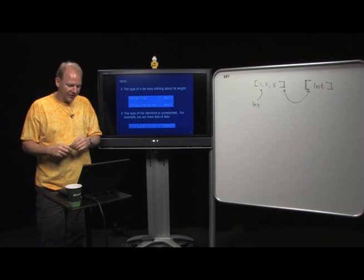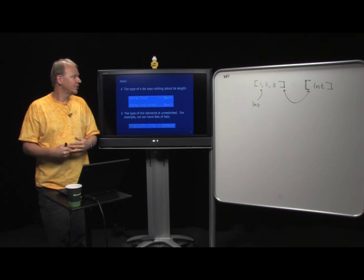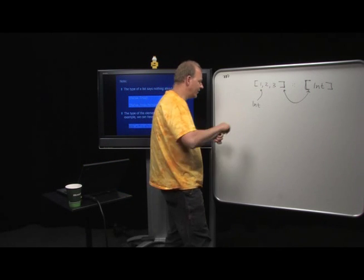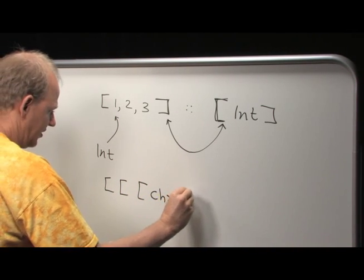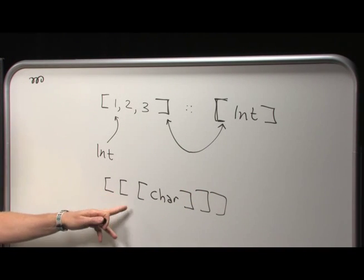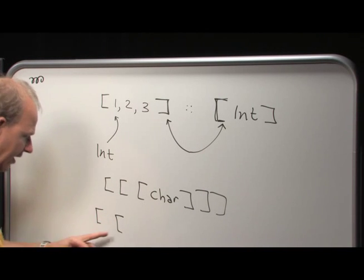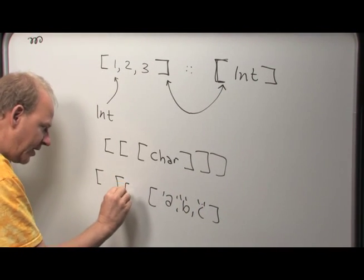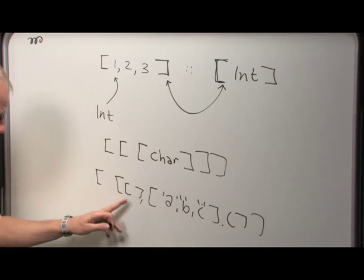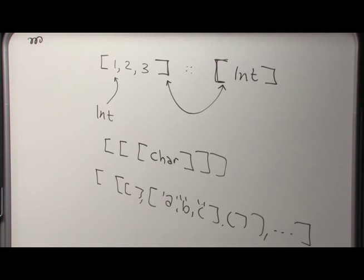We'll see later that tuples encode length in the type. Also, just like generics, you can have lists of arbitrary types. So I can have a list of Int, but I can also have a list of lists of lists of Char. Here you can see again that the notation for types and values has a useful correspondence.